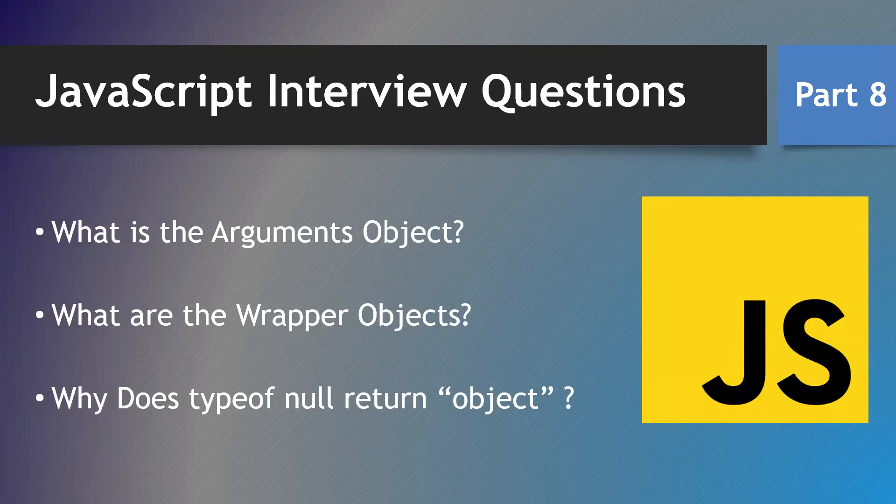Hi all, in this video let's look into JavaScript interview questions part 8, regarding the arguments object, wrapper object, and why typeof null will return object. Let's see one by one.